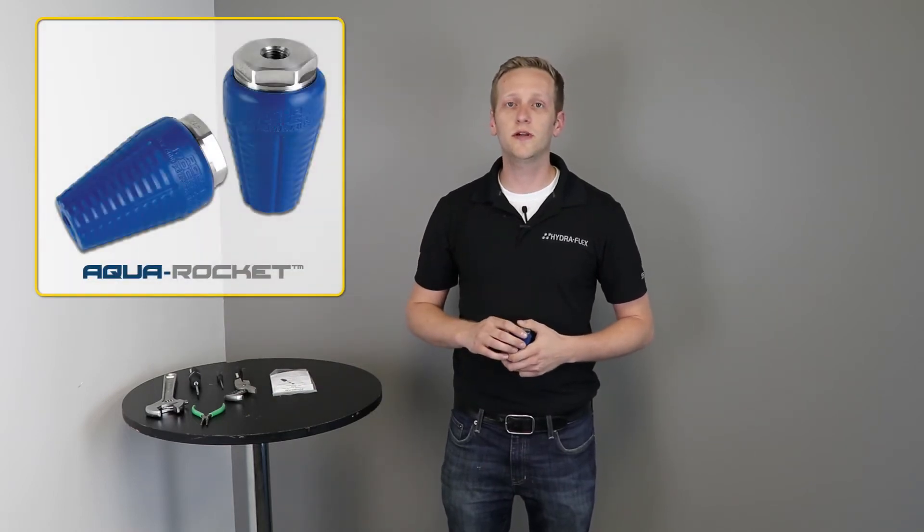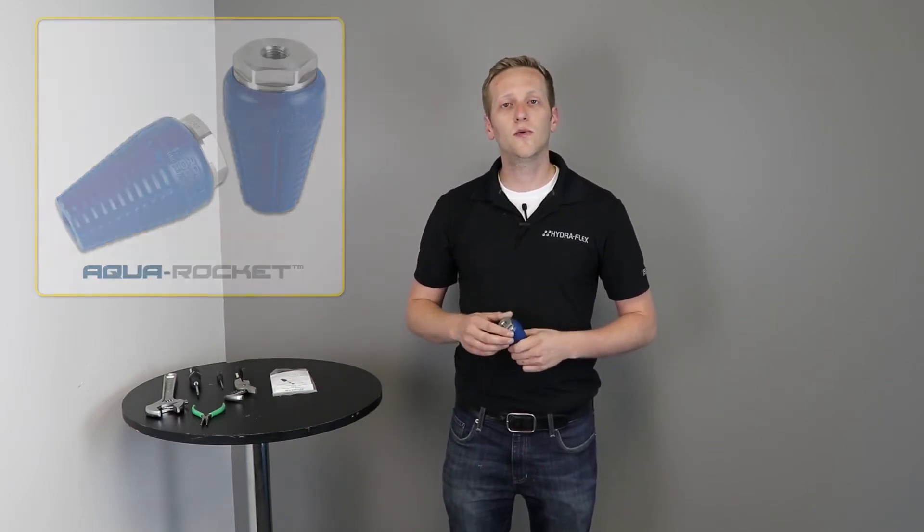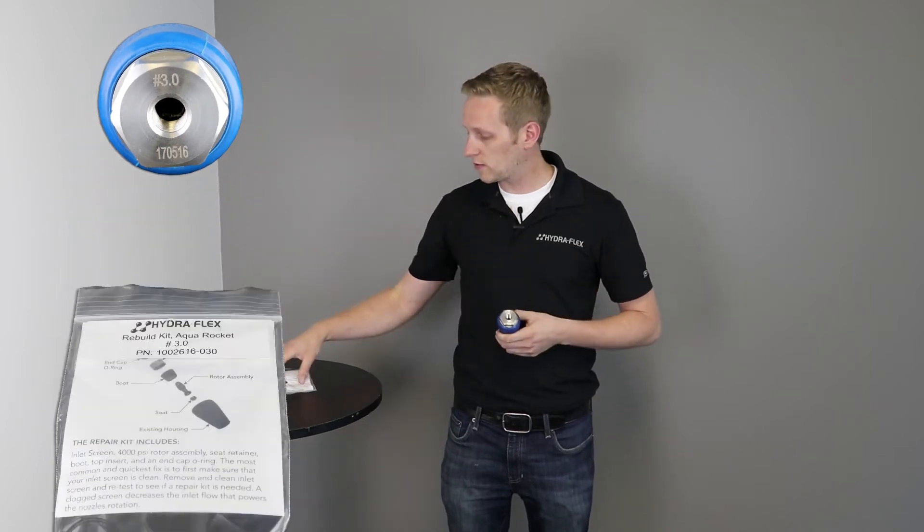Before we get started, you will need to know a few things. When ordering up your nozzle repair kit, you will have to order up the same size nozzle repair kit as the nozzle. You can find that on the end of the nozzle end cap. It'll be laser engraved. This one's a 3.0, so we know that we'll have to order up a 3.0 repair kit. When you get your repair kit, make sure that the nozzle size does match because the internal parts are not interchangeable.